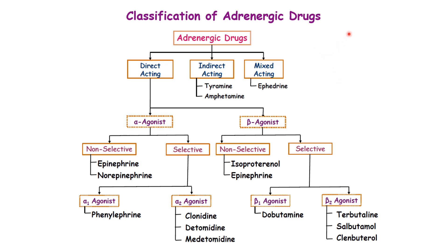Beta-2 receptors are mainly found on the lungs, particularly the bronchi, where they promote bronchodilation. Aside from that, we also have indirect-acting adrenergic agonists, which act on the adrenergic neurons to increase the release of norepinephrine. Examples include tyramine and amphetamine. Mixed-acting agents, such as ephedrine, can act both directly and indirectly.